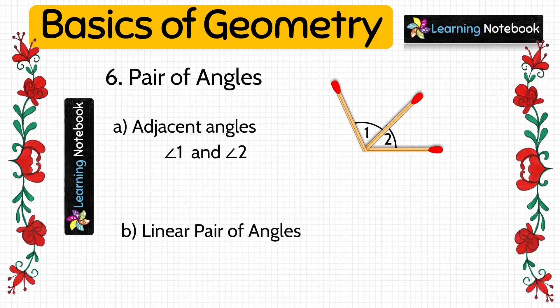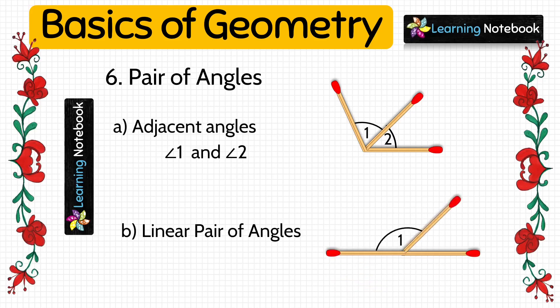The next pair of angles is linear pair of angles. If the sum of adjacent angles is 180 degrees, they are called a linear pair of angles. We are going to paste three matchsticks as shown here, where angle 1 and angle 2 are a linear pair of angles and angle 1 plus angle 2 equals 180 degrees.